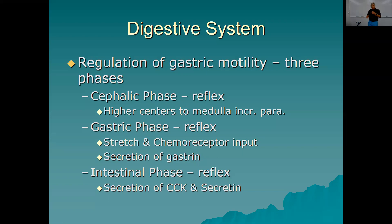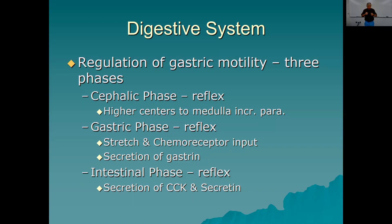The gastric phase begins when food actually hits the stomach and stretches it out. There are stretch receptors and chemoreceptors that detect the presence of food. This causes the secretion of gastrin. Gastrin feeds back upon the muscles and glands of the stomach, turning on secretion and motility. As the stomach squeezes and pushes things around, some of the chyme gets pushed into the pyloric region. That stretching opens the pyloric valve and some chyme empties into the small intestine. When that happens, we have the intestinal phase of gastric motility.